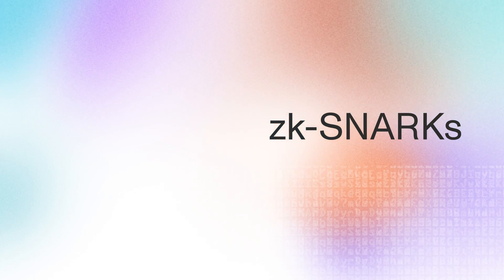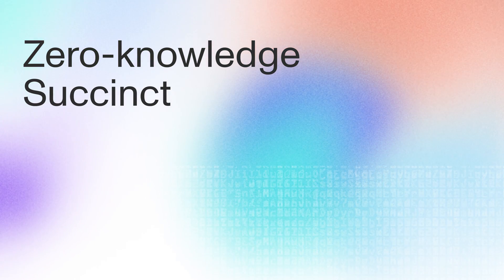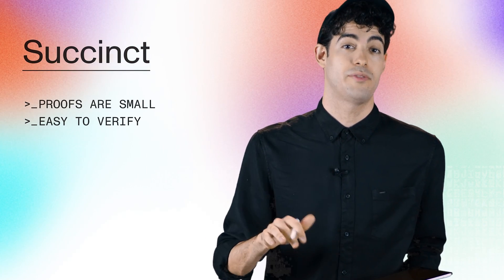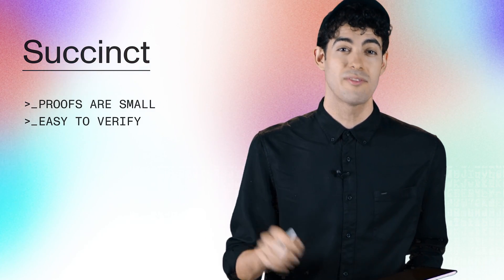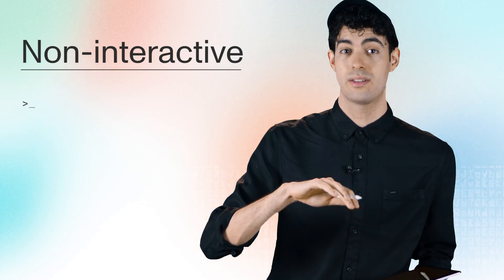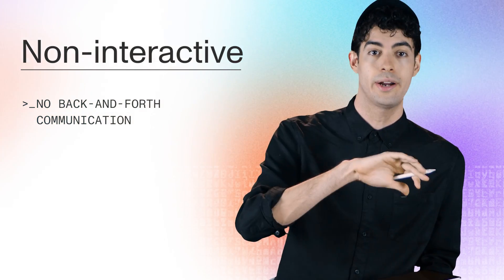We call this a zero knowledge proof because it leaks absolutely no information to anyone who observes it. The Where's Waldo example explains the concept of zero knowledge, but what about the SNARK part? ZK-SNARKs stands for Zero Knowledge Succinct Non-Interactive Argument of Knowledge. Succinct means that the proofs are small and easy to verify, even if the concept being proven is complicated. Non-interactive means that we don't need a back-and-forth communication between a prover and a verifier.